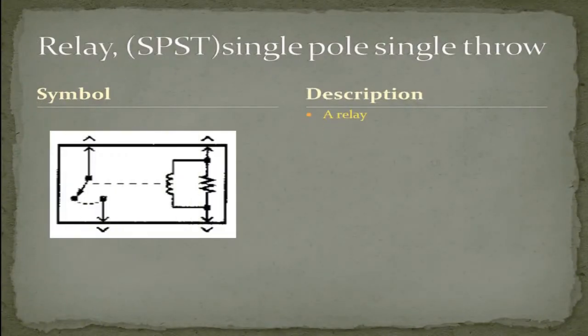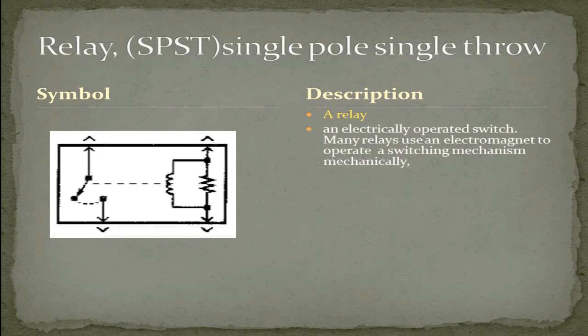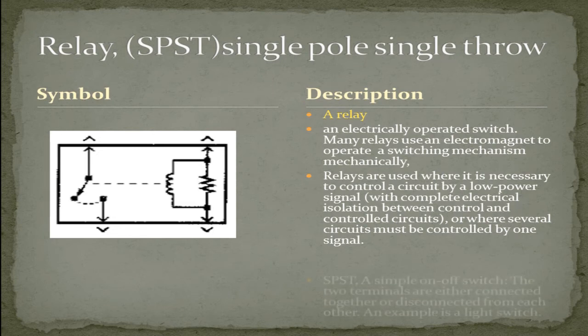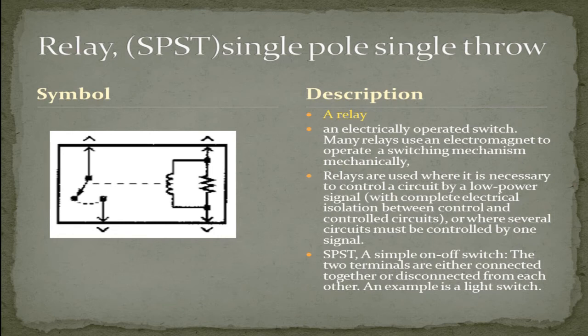A relay. An electrically operated switch. Many relays use an electromagnet to operate a switching mechanism mechanically. Relays are used where it is necessary to control a circuit by a low power signal with complete electrical insulation between control and controlled circuits, or where several circuits must be controlled by one signal. This is a single pole, single throw. A simple on and off switch. The two terminals are either connected together or disconnected from each other. An example is a light switch.